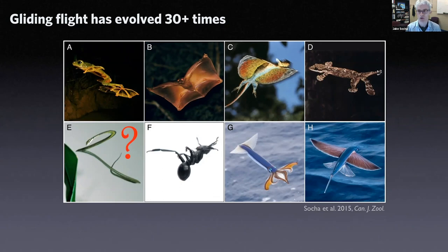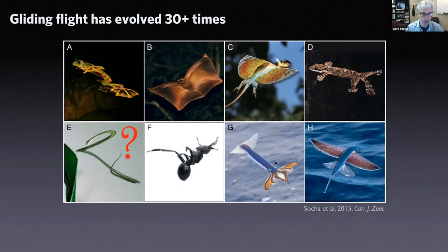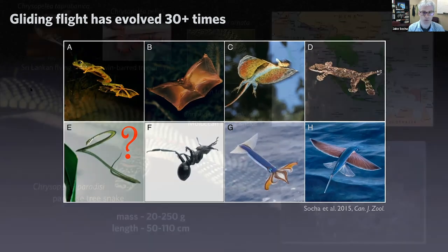Our question centers on the snake: how do you turn this cylindrical thing into a glider? All those other creatures have some kind of surface they extend to the side — even ants use their legs and are symmetrical left to right. But snakes are not symmetrical that way, and they don't have wings or any appendages. To me, that makes them a truly bizarre subject to work on.